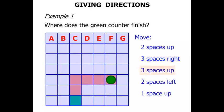Then three spaces up. One, two, three. Then two spaces to the left. One, two. And finally one space up. There we go. So the counter has finished at point D.